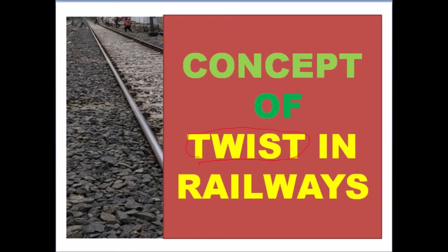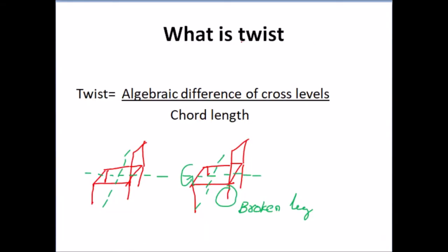What is twist? Twist is the algebraic difference of cross level divided by chord length. So we need to understand three terms: what is algebraic difference, what is cross level, and what is chord length.